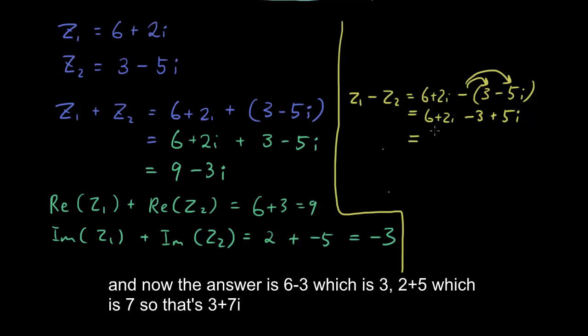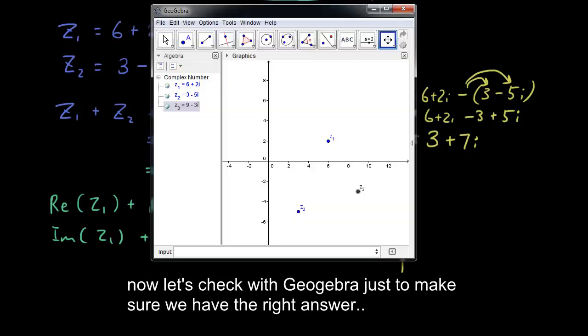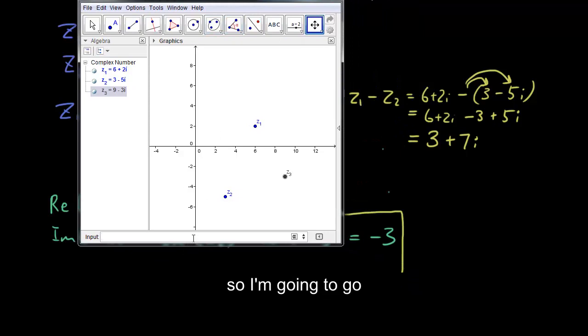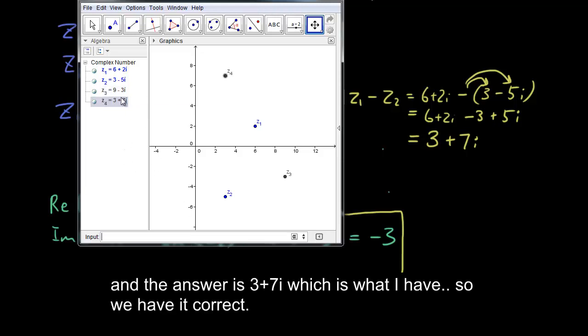And now the answer is 6 minus 3, which is 3. 2 plus 5, which is 7. So it's 3 plus 7i. Now let's check with Geogebra just to make sure we have the right answer. So I'm going to go type in z1 minus z2. And the answer is 3 plus 7i, which is what I have.